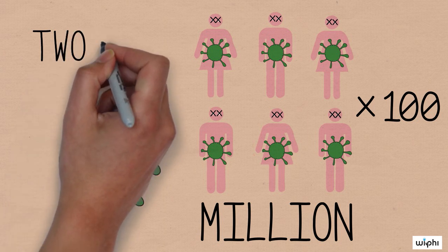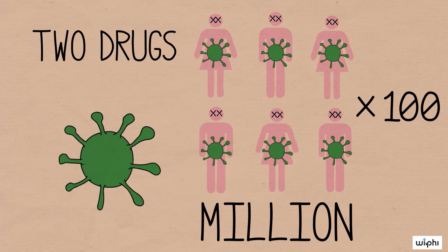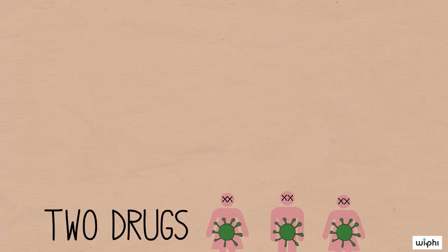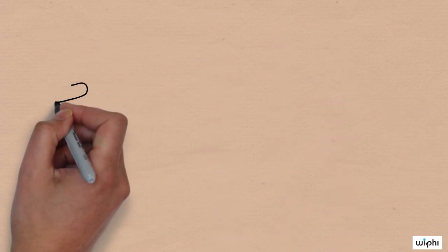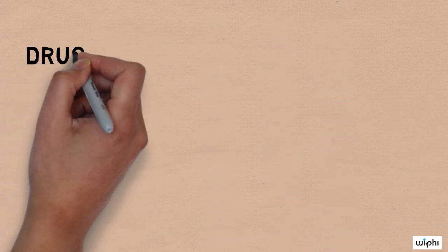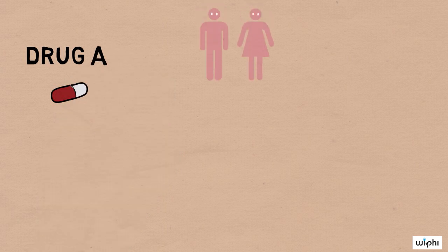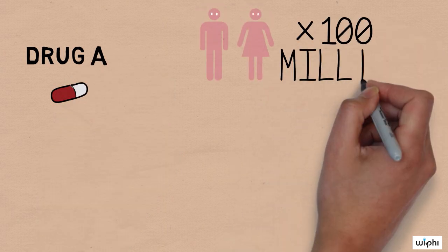The good news is that there are two drugs available to treat the disease, and your team can decide which one to put into mass production. Clinical trials show that if you go with the first drug, drug A, you'll be able to save 200 million of the infected people.